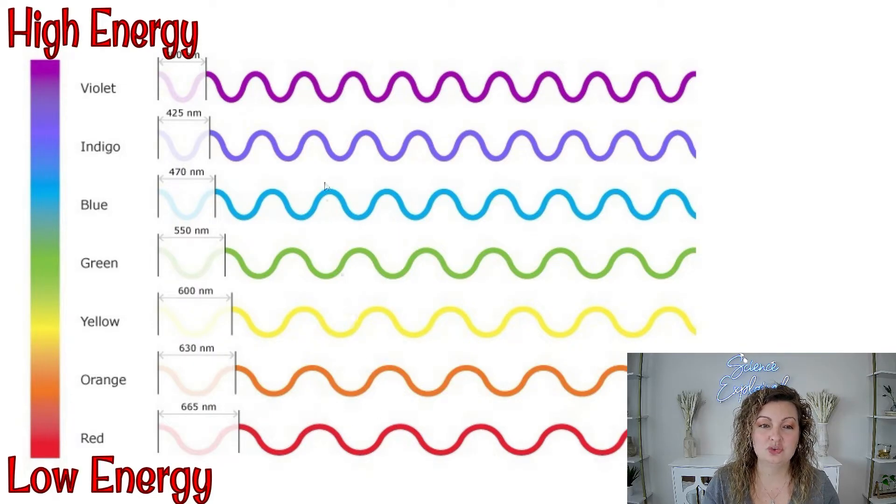It gets shorter and shorter as we go down to violet, and violet has the shortest wavelength, which means it also has the highest energy and the highest frequency. So we have a lot more waves occurring.